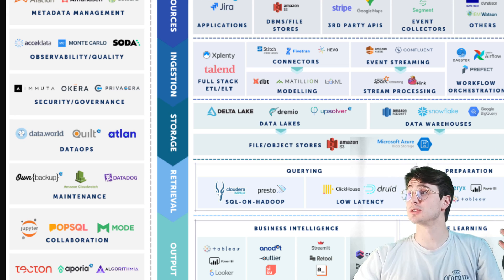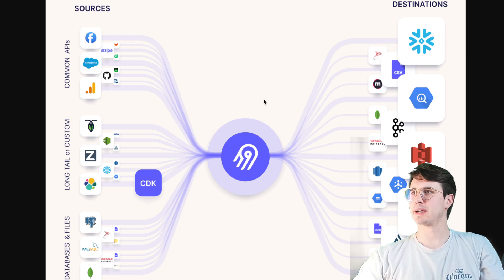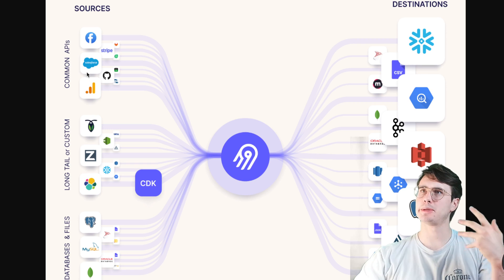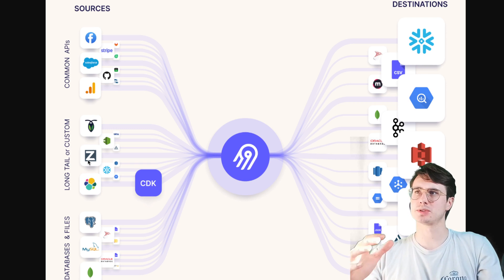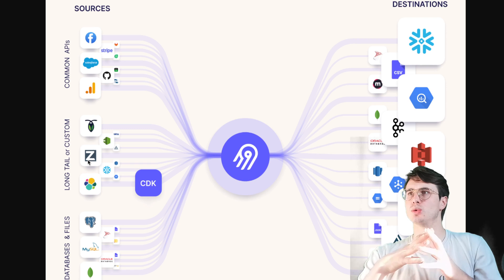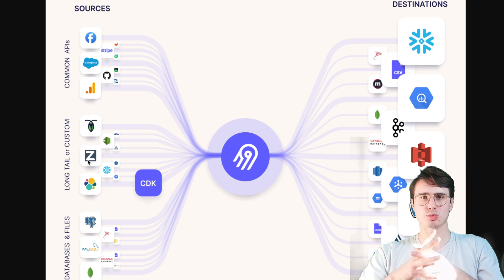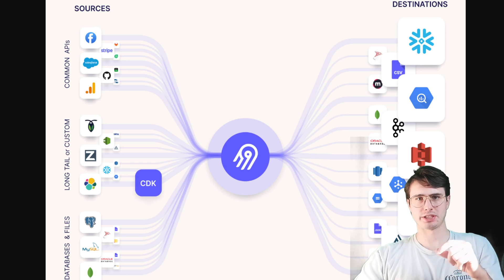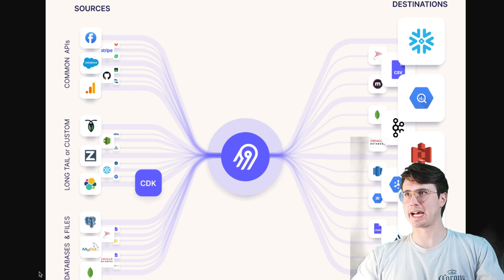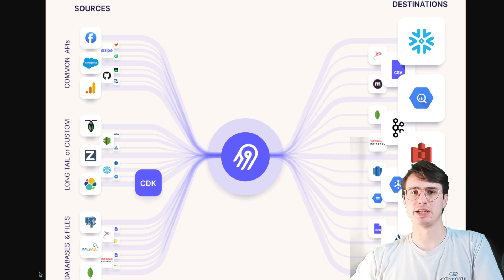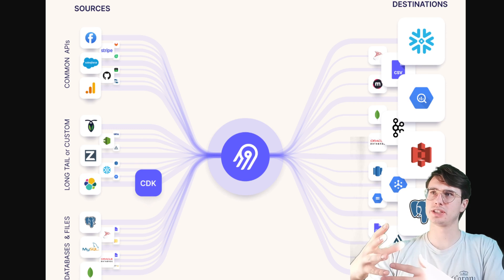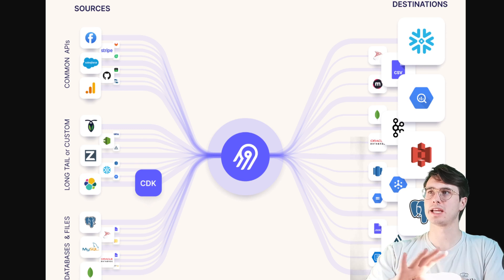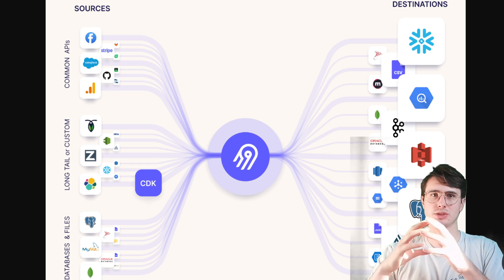Let's look at each layer individually. This graphic from Airbyte is really good — it shows your many different sources you'll be pulling from: common APIs like Facebook, Salesforce, Stripe, GitHub, and others. But you might also have some long-tail sources, specific applications unique to your business. Maybe you have databases or files storing intermediary transaction data that gets batch transferred into your back-end data warehouse.